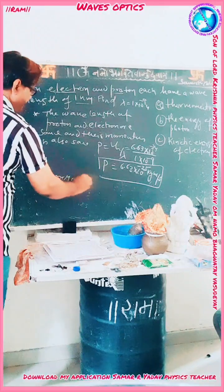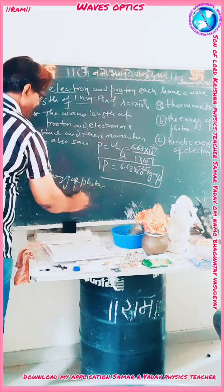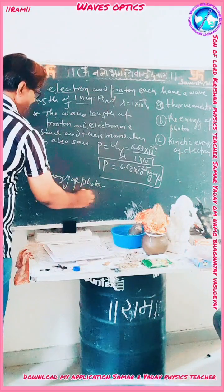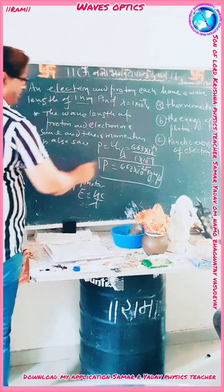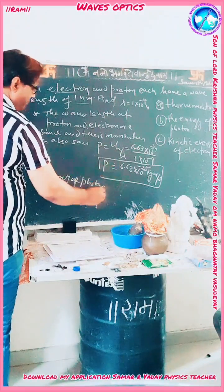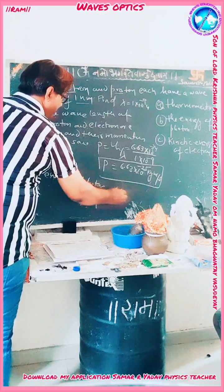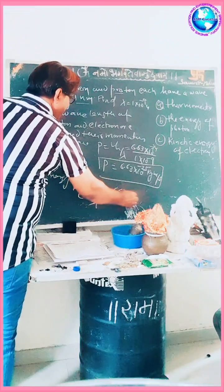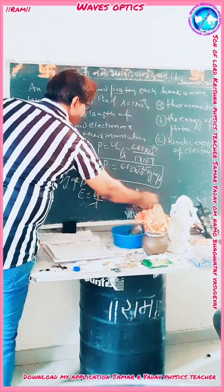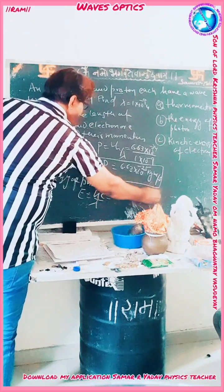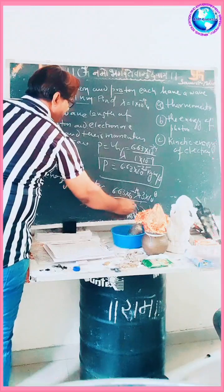Now, the energy of the photon. The energy is given by E = hc/λ. We know h = 6.63 × 10⁻³⁴, c = 3 × 10⁸, and λ = 1 × 10⁻⁹ meter.